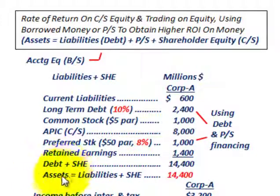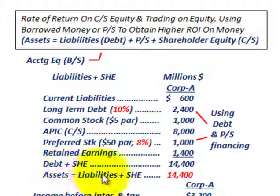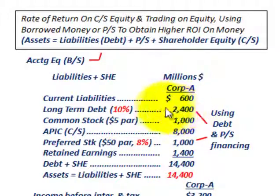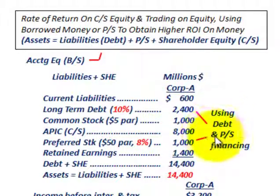Assets are also $14,400,000, confirming that assets equals liabilities plus shareholders' equity. We're going to concentrate on the long-term debt and preferred stock, since we're using both for financing assets.